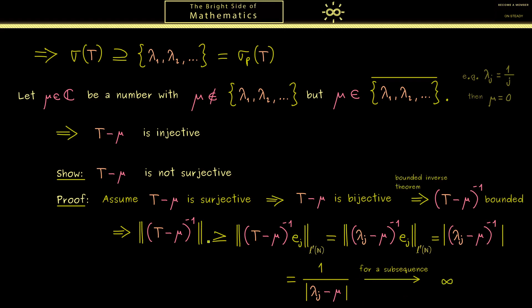Or more formally you can choose a subsequence of the natural numbers here and then this sequence goes to infinity. So no matter how we put it this number here can't be finite. And that's the contradiction because we know it should be bounded. Therefore our conclusion is it's not surjective.